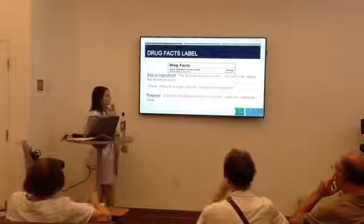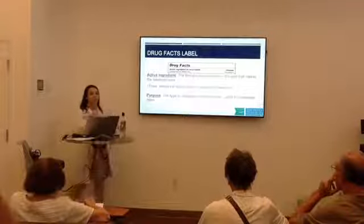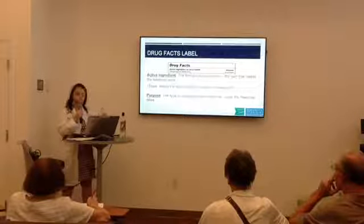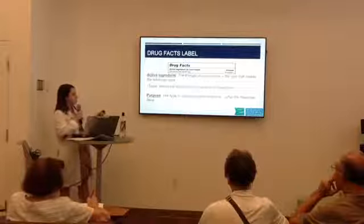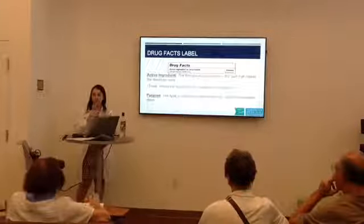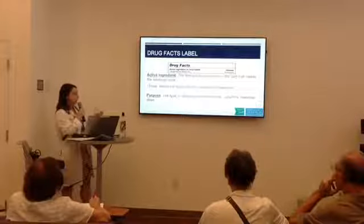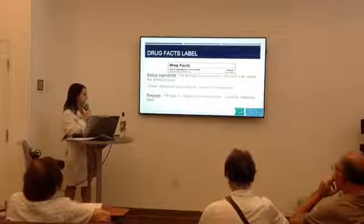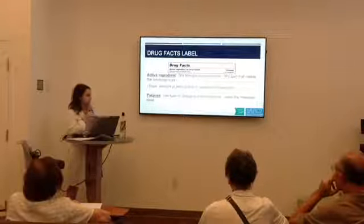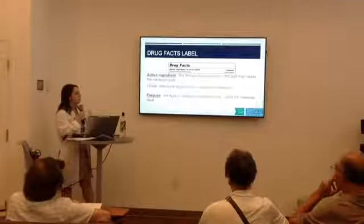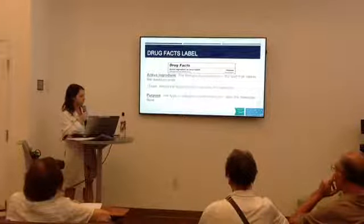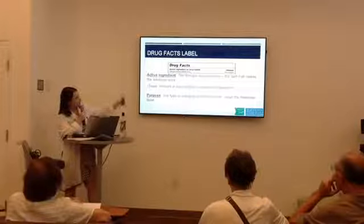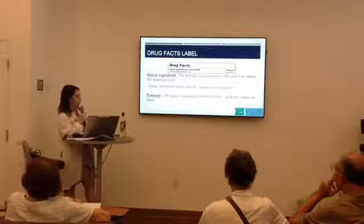At the top of the label, you're going to see the active ingredient and the purpose. The active ingredient is the therapeutic substance — the part of the medication that's going to take care of your symptoms. You'll also see the dose, which is the amount of the active ingredient in each unit, whether that's a pill, capsule, teaspoon, or tablespoon. Following that, you'll see the purpose — the type or category of the medication, or what the medication does for you. For example, you'll see the drug name, the dose, and then the purpose, such as antihistamine.